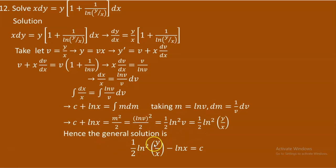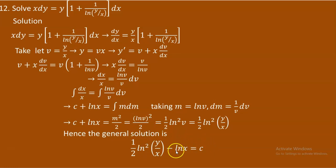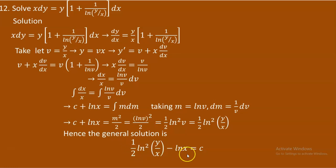Back-substitute v = y/x: (1/2)(ln(y/x))² − ln x = C is the general solution. Having a constant C makes this a general solution. This is an implicit solution because y and x are not separated onto different sides — we have not written y explicitly in terms of x.